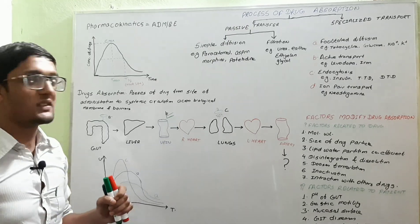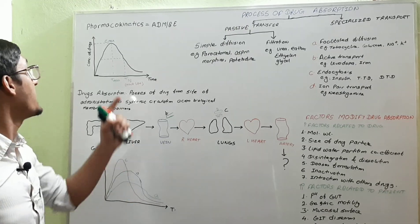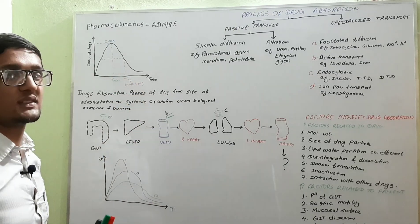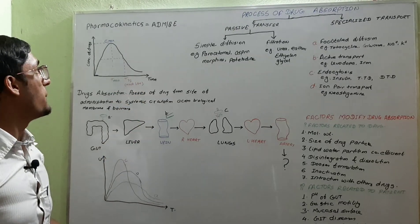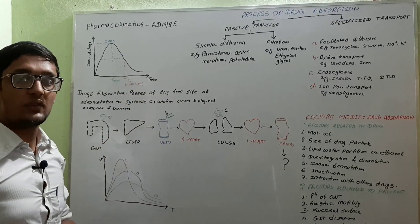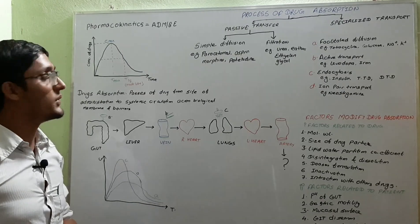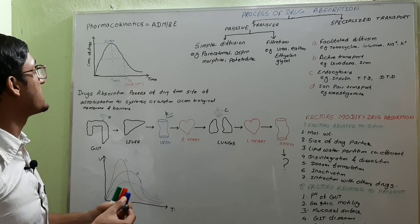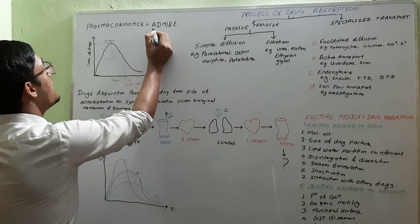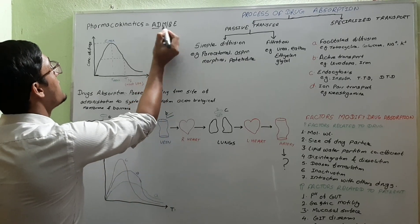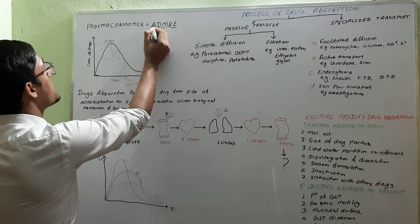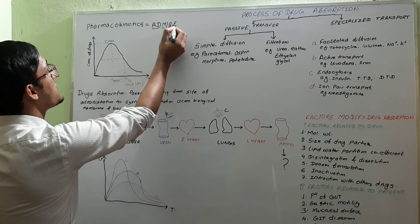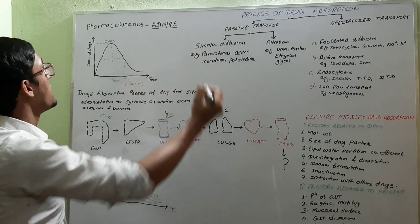Most students will be confused about pharmacokinetics and pharmacodynamics. Simply, pharmacodynamics deals with the mechanism of action of the drug and its physicochemical properties. To remember pharmacokinetics, I made a mnemonic: ADME — Absorption of the drug, Distribution of the drug, Metabolism or biotransformation, and Excretion of the drug.